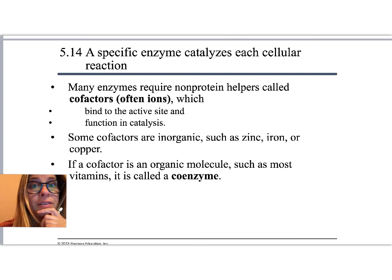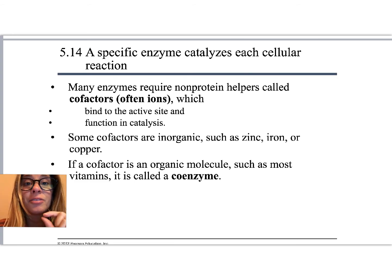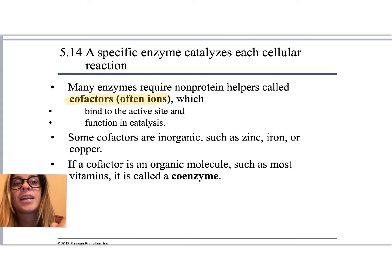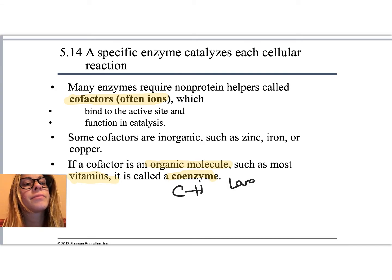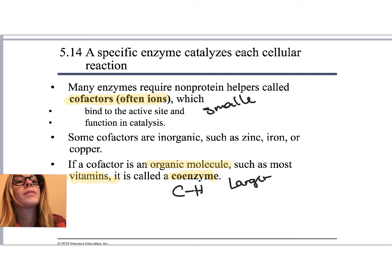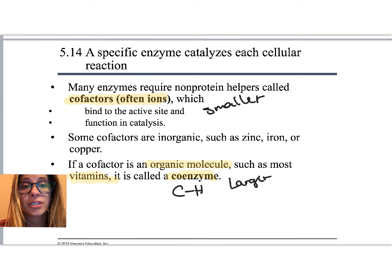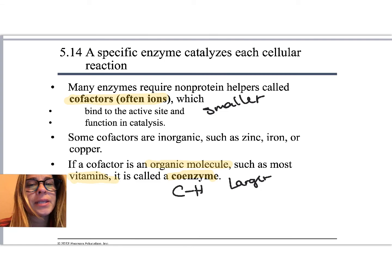Other things that contribute to the specificity of enzymes and their need for very particular conditions are cofactors and coenzymes. Cofactors are small — like ions, pretty tiny. Coenzymes are usually a little bigger and are organic molecules, meaning they have a C-H bond. The function of cofactors and coenzymes is to make sure we catalyze these reactions in the right abundance, keeping things in check and in balance with the surroundings, sometimes helping time reactions more appropriately.